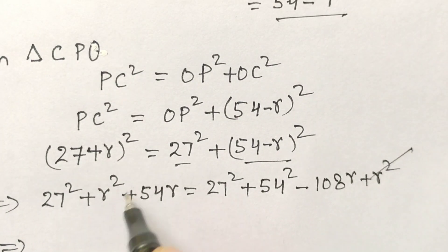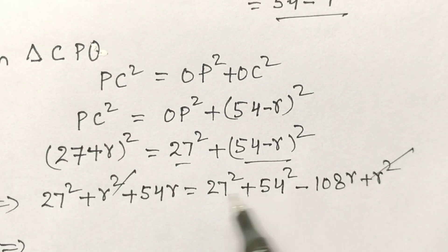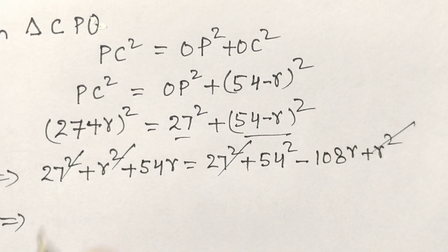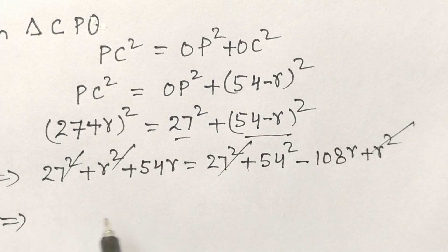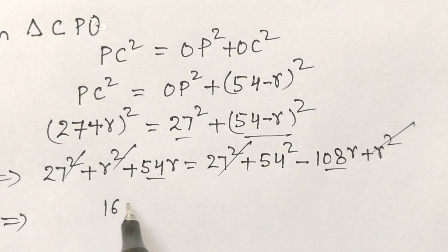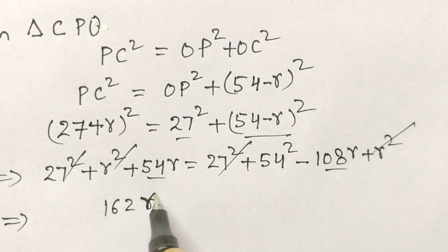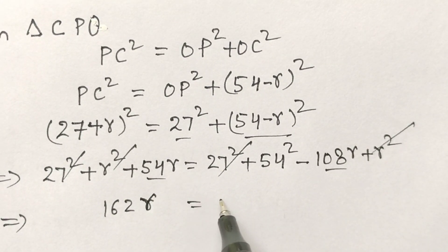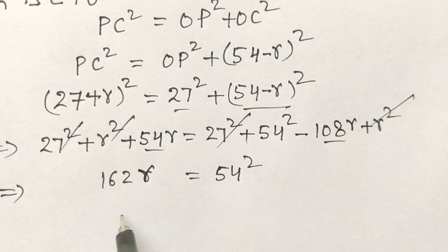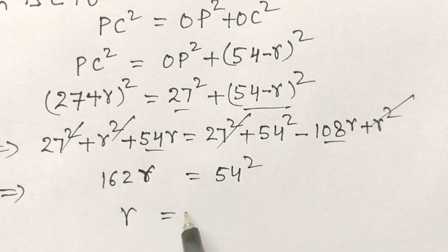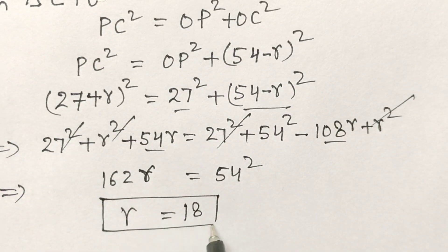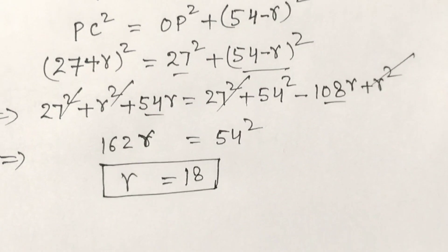So the R² terms and the 27² terms cancel out. We are left with 162R equals 54², which gives R equals 18. So the radius of the small circle is 18 cm.